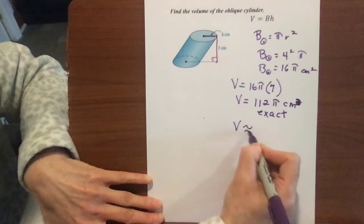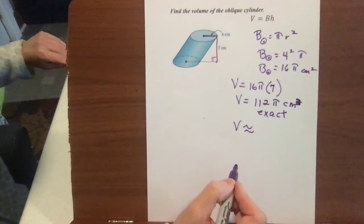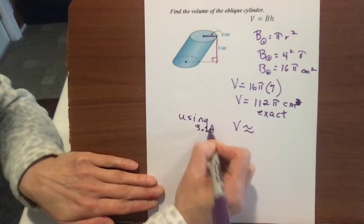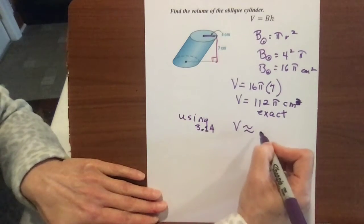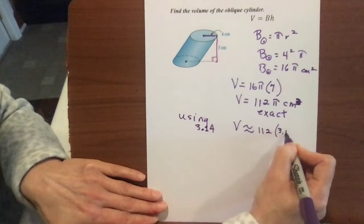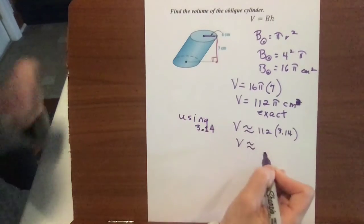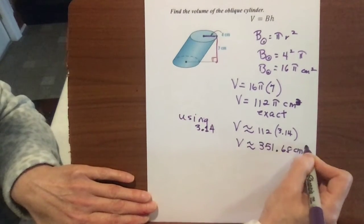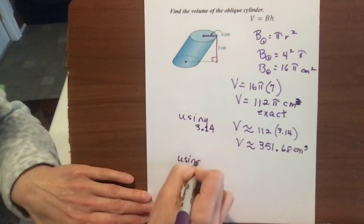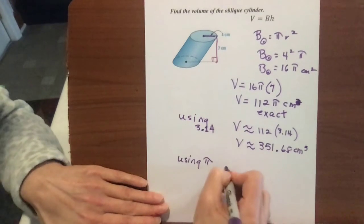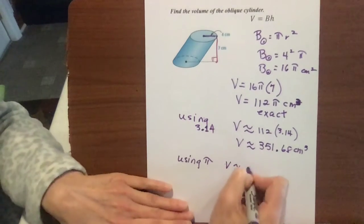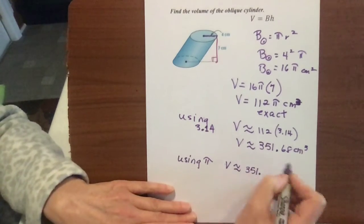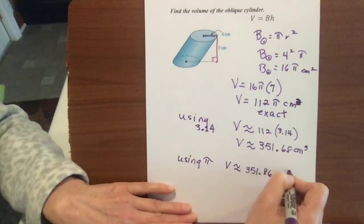Now, if you need it to be approximate, if you're using 3.14, so I'm going to show you two things. Using 3.14, which is what some of the online software like iXL uses, when you take that 112 times 3.14, substitute it in for pi, you're going to get approximately 351.68 centimeters cubed for your volume. If you're using pi and you're just putting pi in on your calculator, the volume is going to come out a little bit different. Not much, but it's significant enough where it changes your digits.